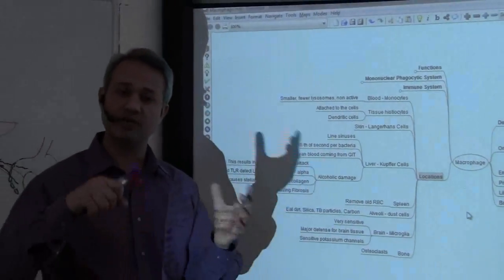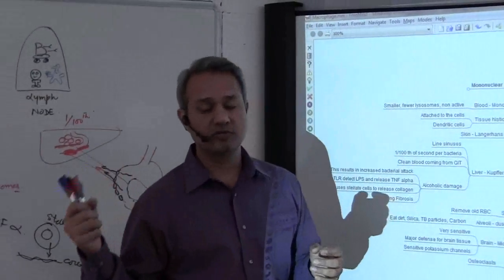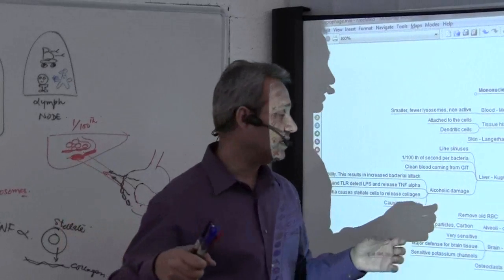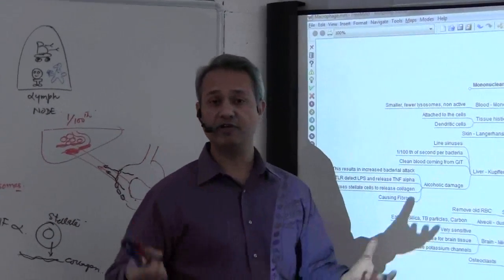But the structure is almost the same. We have red pulp, white pulp, we have the blood sinuses and so on. Inside the lymph node the sinuses are for the lymph, and inside the spleen the sinuses will be filled with blood.